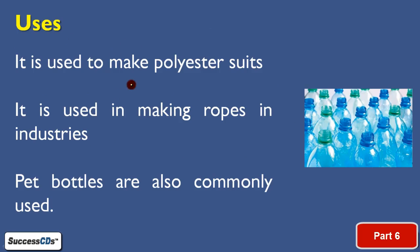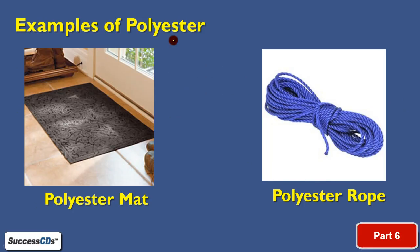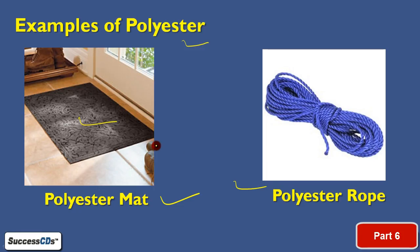Polyester is used in many applications: polyester suits, ropes, and most commonly PET bottles, as shown in the figure, which are used for different purposes. You can also make mats — as seen in the figure, a beautiful mat on the floor made of polyester — and strong ropes. These are a few examples of things you can make from polyester.